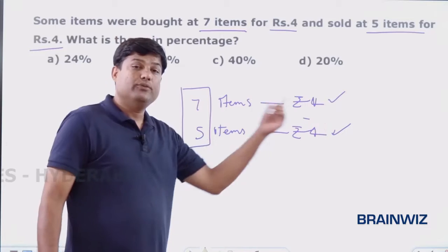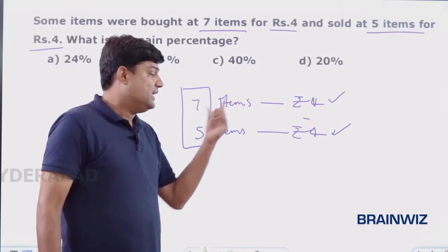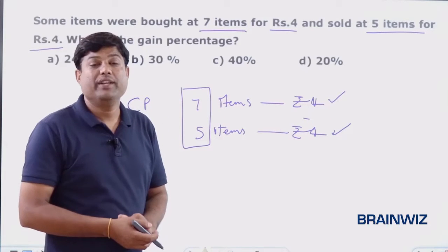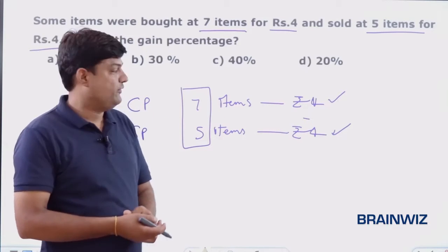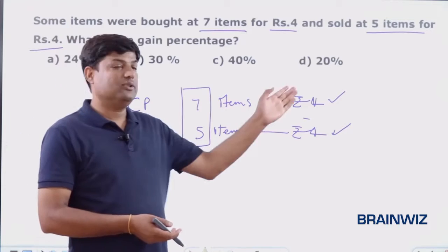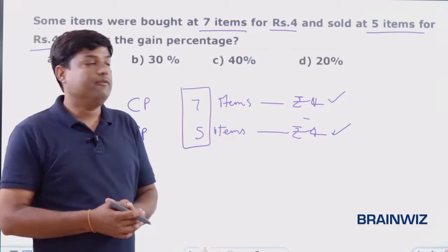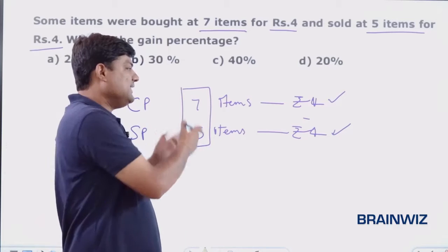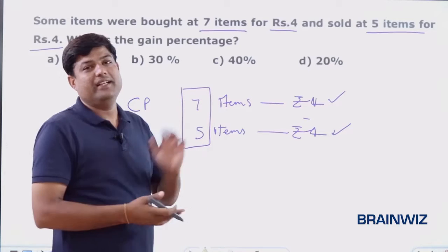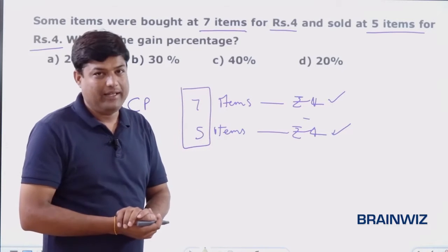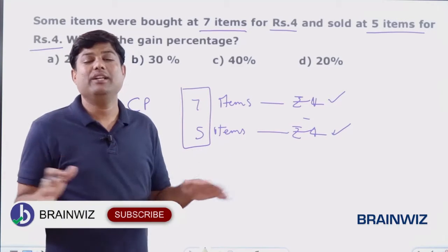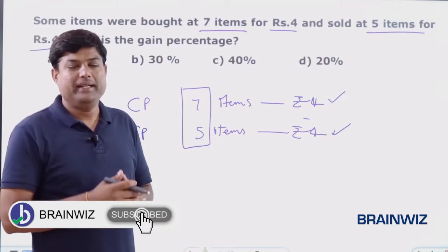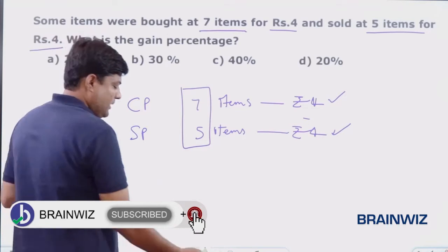But this 4 rupees is for 7 items and these 4 rupees is for 5 items. So we cannot judge profit or loss based on these things. It will be possible when we equate these two. When quantities are same, then we can decide the profit and loss. When quantities are not same, you cannot decide the profit or loss.